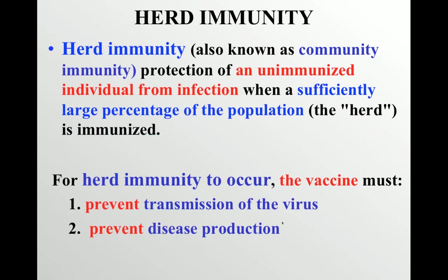Next is herd immunity, also known as community immunity. This is the protection of an unimmunized individual from infection when a sufficiently large population of that community is already immunized — that large population is the herd. For herd immunity to occur, the vaccine must prevent both transmission of the virus and disease production.